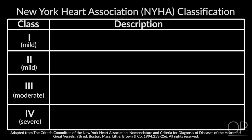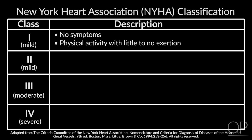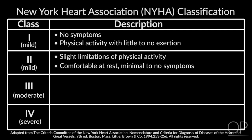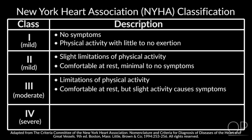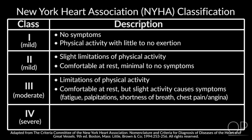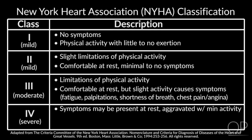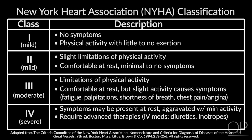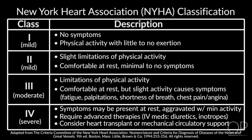Class 2 patients have only slight limitations of physical activity, are generally comfortable at rest, and complete most physical activities with minimal to no symptoms. Class 3 patients have marked limitations with physical activity; they are comfortable at rest, however, less than ordinary activity will cause symptoms such as fatigue, palpitation, shortness of breath, or anginal pain. Class 4 patients are the most severe, having symptoms even at rest that are aggravated with minimal activity. These patients generally require advanced cardiac therapy such as IV diuretics and inotropes, and may be considered for heart transplantation or mechanical circulatory support.